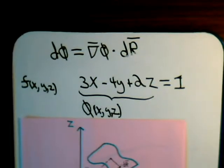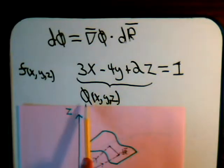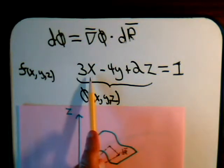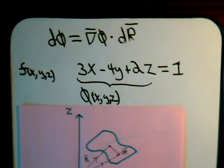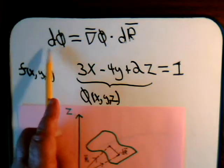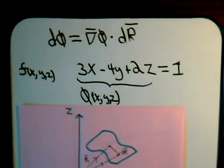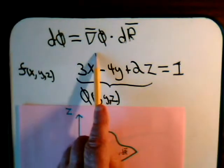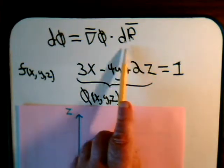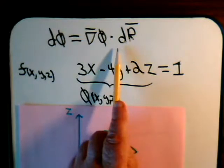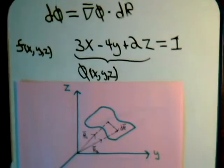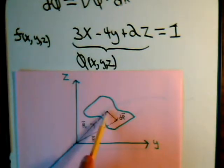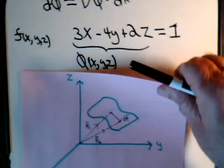For our three-dimensional surface — in this particular case where 3x minus 4y plus 2z equals 1 — but anywhere on any particular three-dimensional surface, its scalar function is a constant, so its differential is zero. That implies that the gradient is perpendicular to the differential displacement dr. It's perpendicular to the differential of the position vector dr, and this is tangent to the surface at some point, just as in the two-dimensional case.